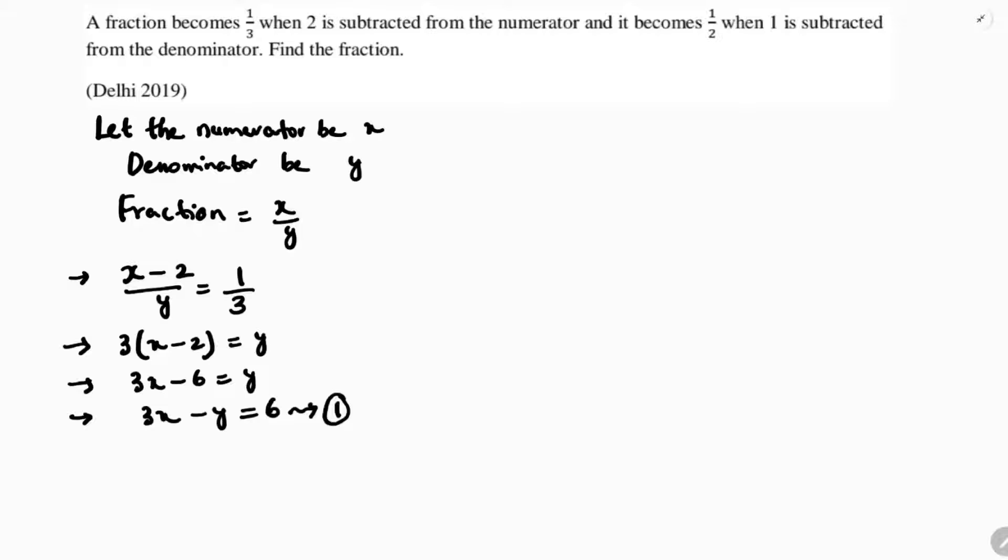And it becomes 1 by 2 when 1 is subtracted from denominator. 1 is subtracted from denominator, it becomes 1 by 2. Now if we cross multiply, 2x equals y minus 1. So 2x minus y equals minus 1. This is equation 2.